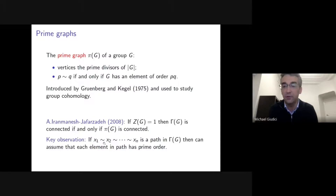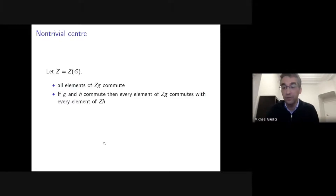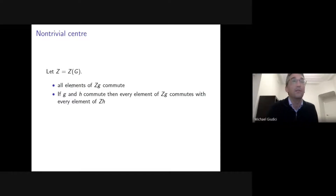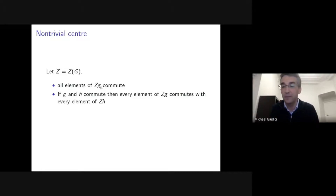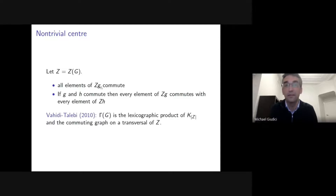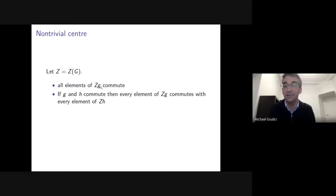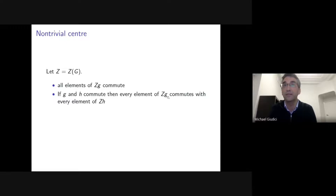So often when studying the commuting graph it's useful to study the prime graph, which has been well studied for many groups. For groups with non-trivial center, if Z is the center of G, then every coset of the center gives a clique in the commuting graph. Moreover, if two elements commute, then every element in their respective cosets also commutes, so we can study the commuting graph by looking at cosets of the center.